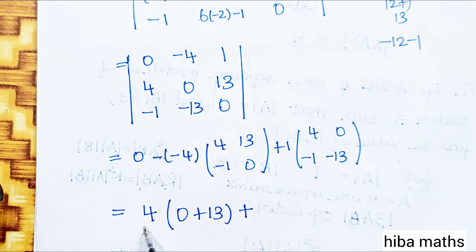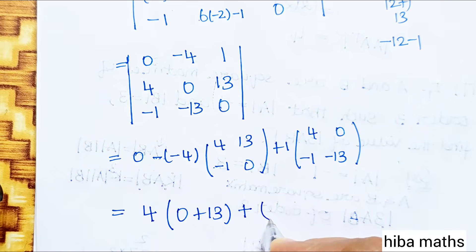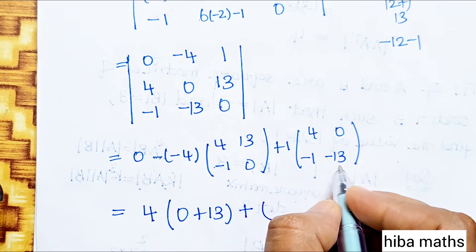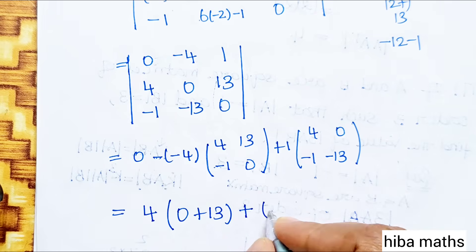Evaluating: 0 minus (−4)×(0 + 13) plus 1×(−52 − 0). That gives 0 plus 4×13 plus (−52). So 0 plus 52 minus 52.